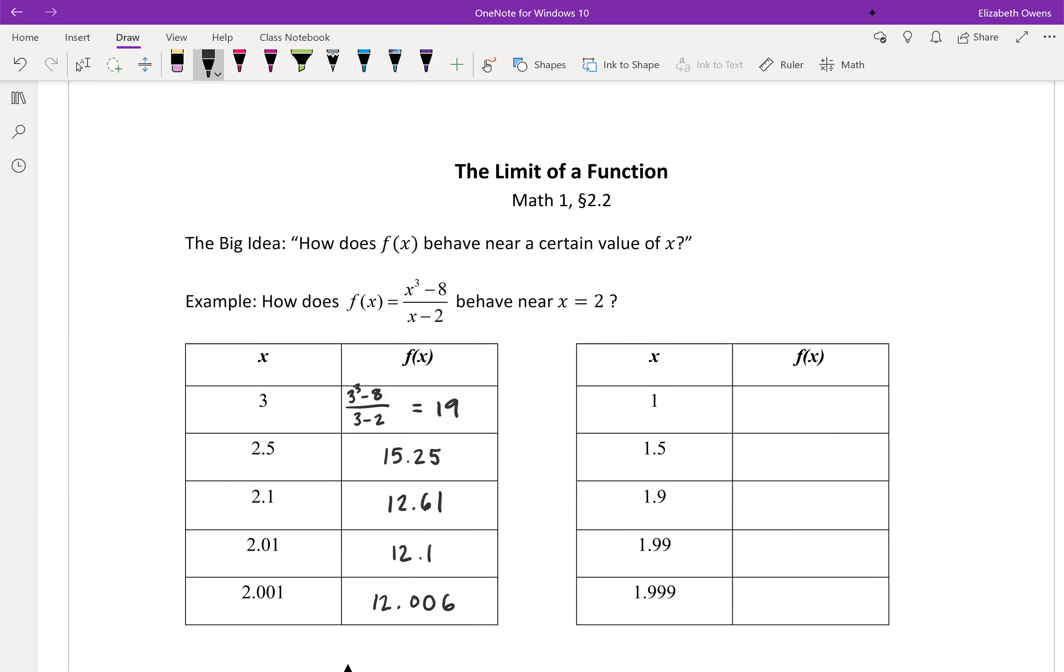And then, you know, as we're getting close to or near x equals 2, we could also come at that from values that are smaller than 2. So that's what the other table was for.